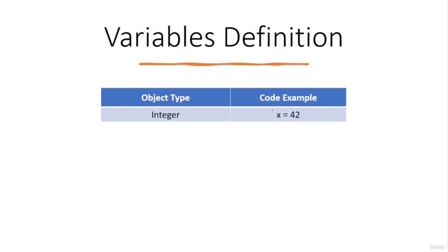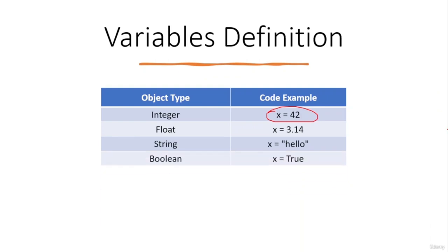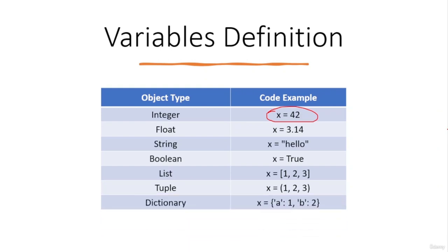For example, here you can see the integer type variable 'x = 42'. Remember, we didn't mention the data type because Python is dynamically typed — the type is determined at runtime according to the data assigned. Similarly, you can define float, string, boolean, list, tuple, dictionary, and set variables. Notice we didn't mention any data type with any variable, yet we defined different types.